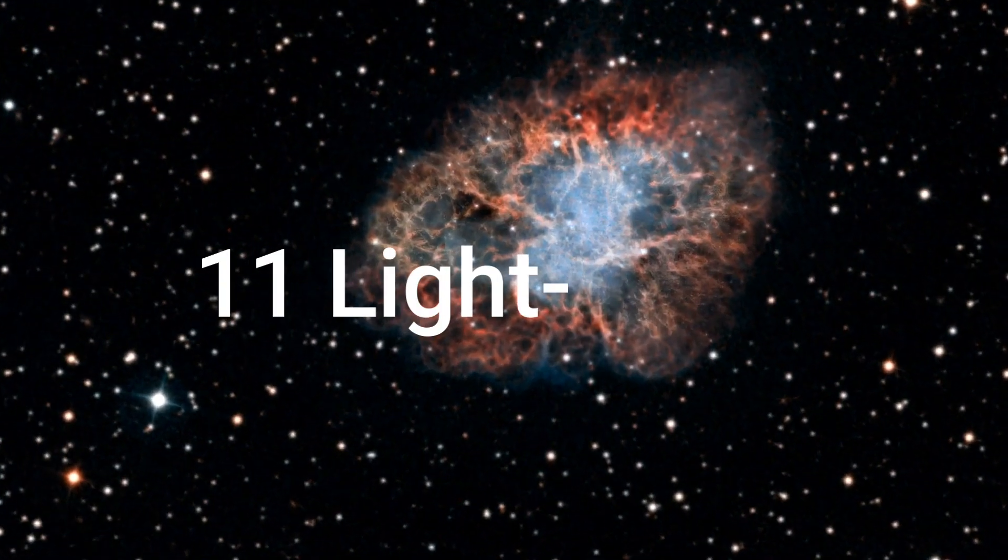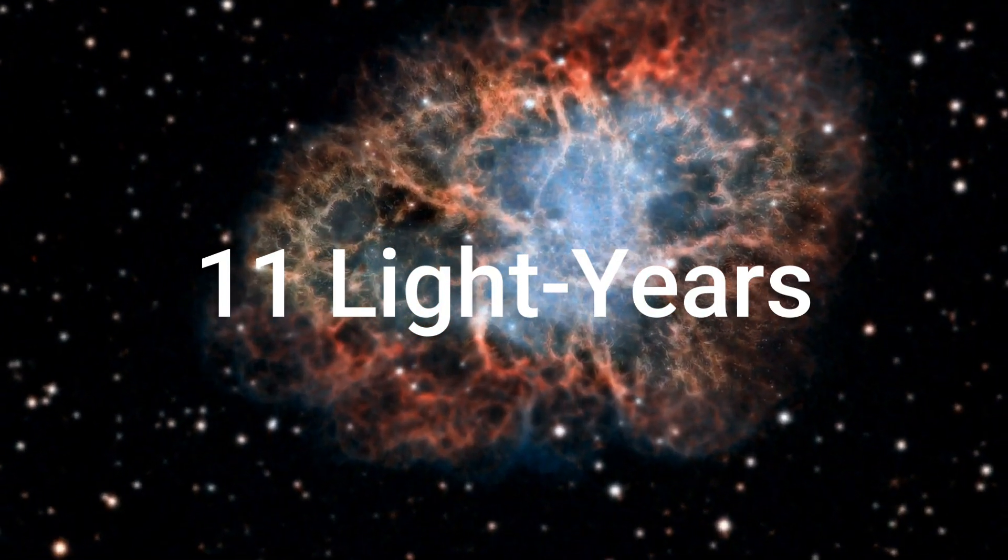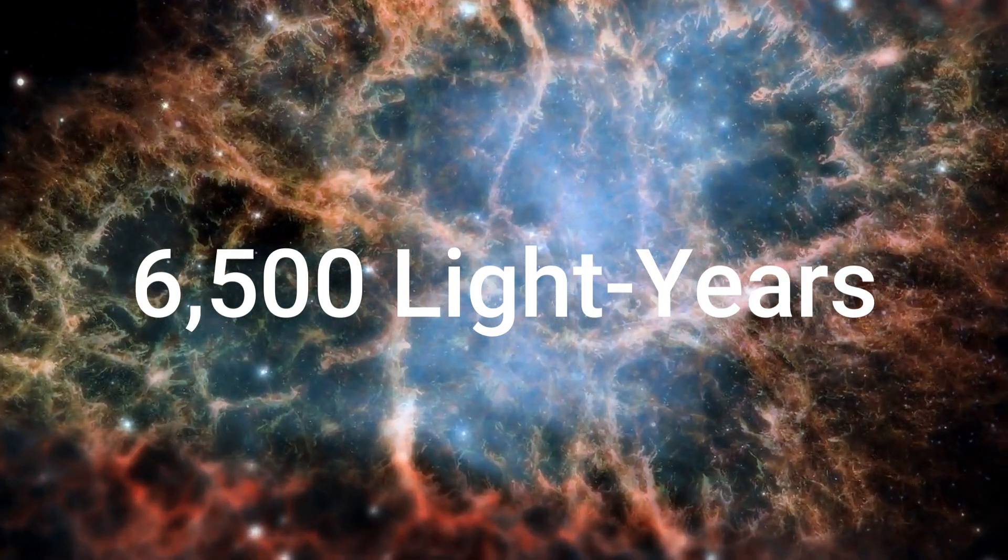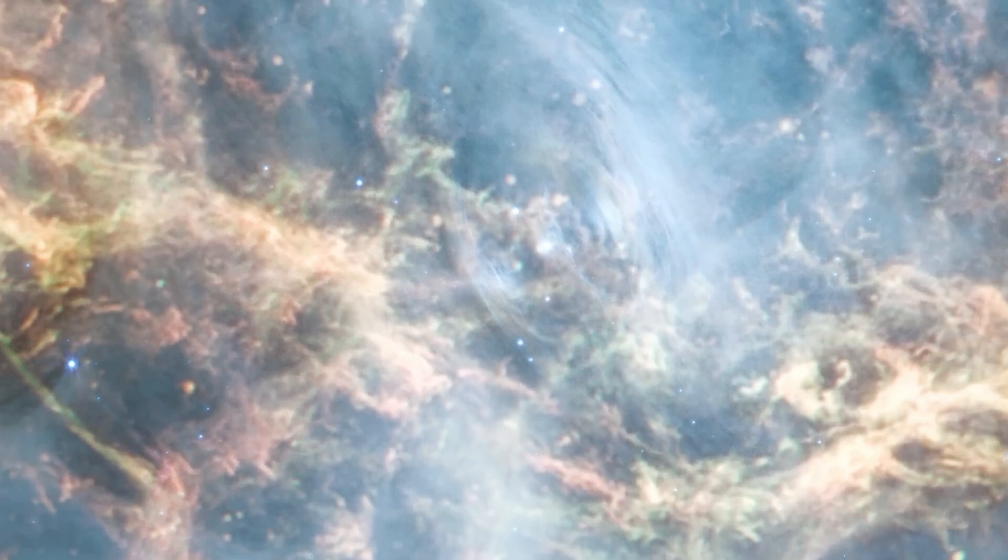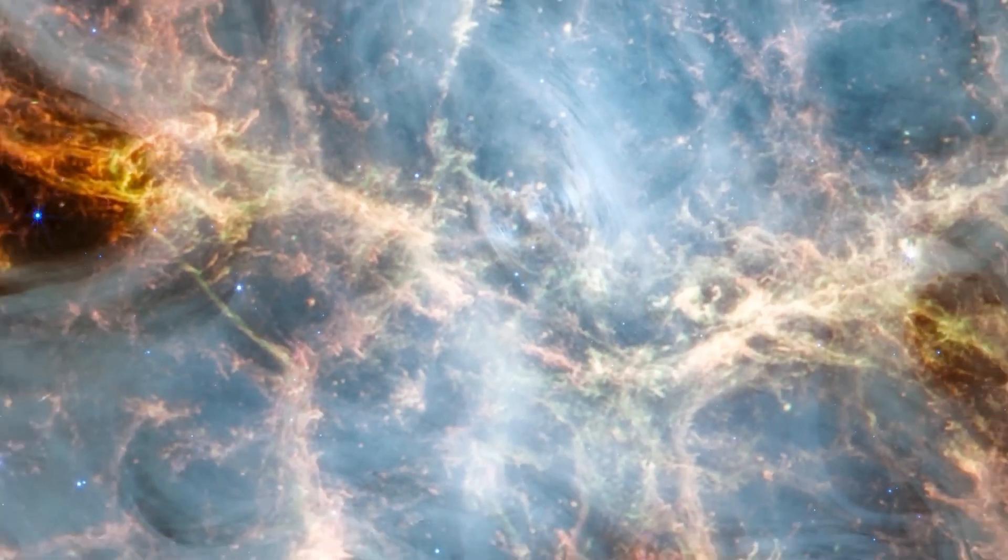Spanning about 11 light-years across and located approximately 6,500 light-years from Earth, the Crab Nebula is a complex and dynamic structure. It consists of a central pulsar, a rapidly rotating neutron star surrounded by a cloud of gas and dust.